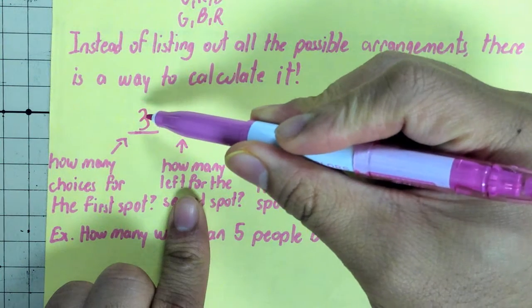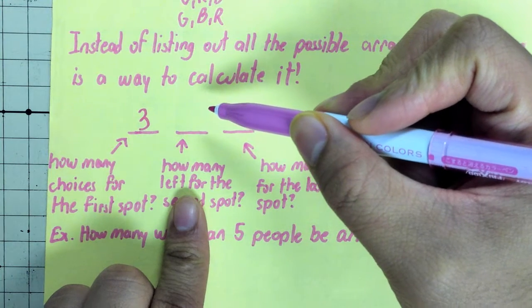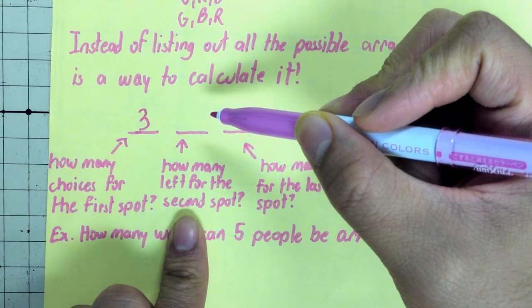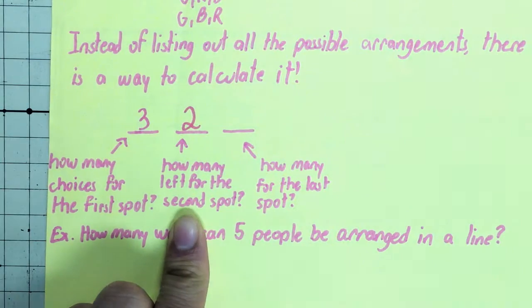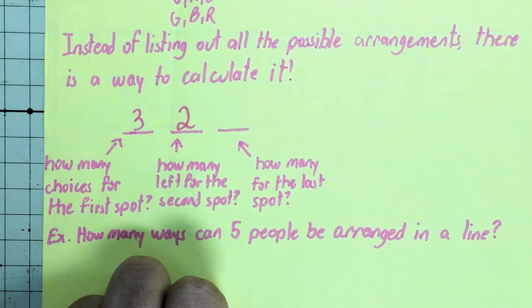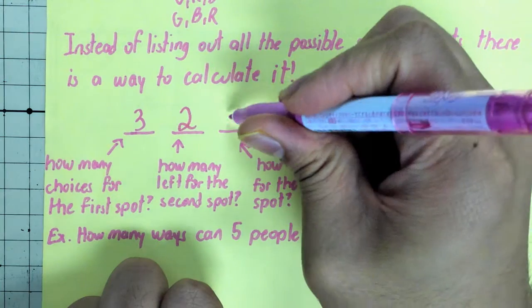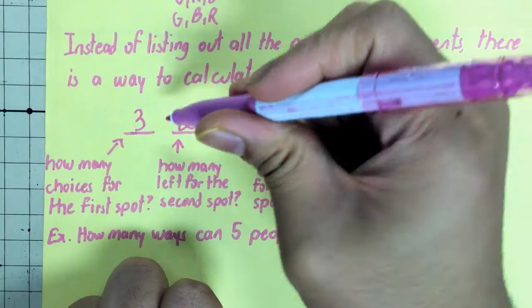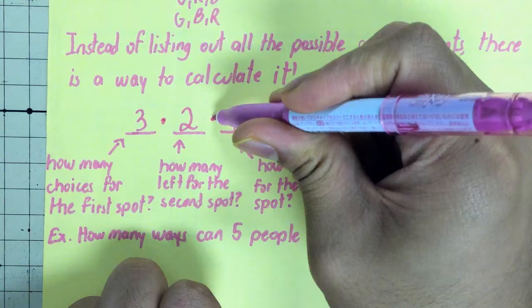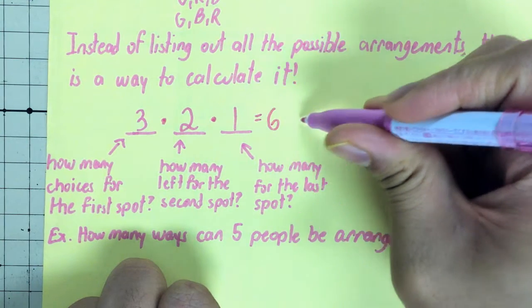Now I put one marker here. That means when I move over to my second spot, how many are left for the second spot? I have two markers left to choose from. And then in my last spot, how many do I have left for the last spot? I have one marker left. So what we can do is three times two times one equals six ways.